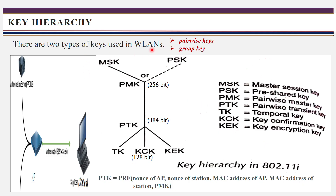In wireless LAN there are two types of keys. One is pairwise key, which is used to protect the communication between access point and a single station. Whereas group key is used to protect the broadcast or multicast frames between access point and multiple workstations.